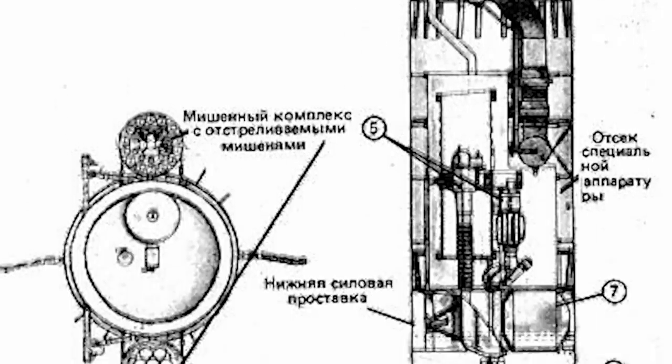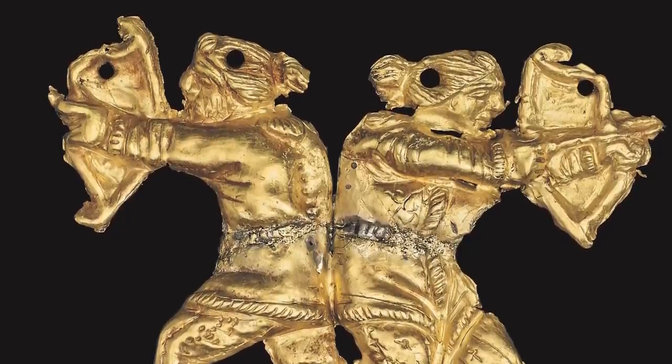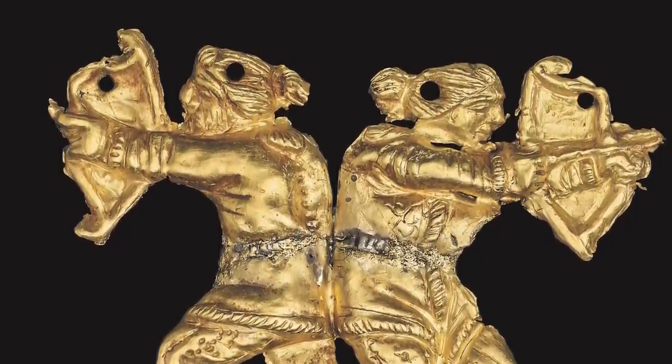The spacecraft became known as Polyus Skiff. Polyus is Russian for pole, as in the extremity of an axis or sphere. The word Skiff refers to the Scythians, an ancient tribe of warriors in Asia and the European equivalent of a barbarian.